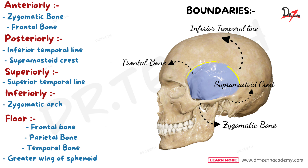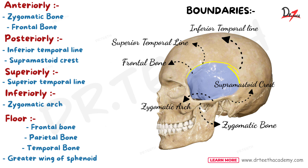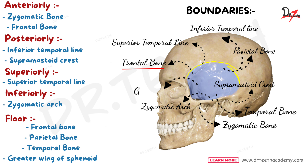Superior to this fossa, we have the superior temporal line, and inferiorly it is bounded by the zygomatic arch. Its floor is made up of the frontal bone, parietal bone, temporal bone, and greater wing of sphenoid. The temporal fossa is present above all these bones.